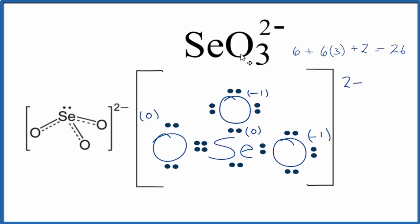This is Dr. B with the Lewis structure for SeO3 2- minus. Thanks for watching.